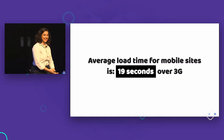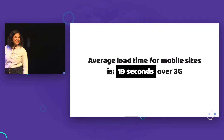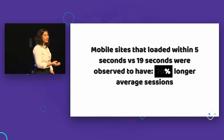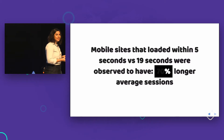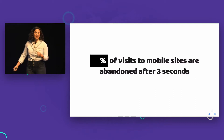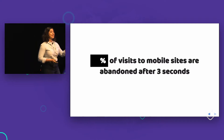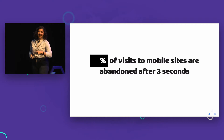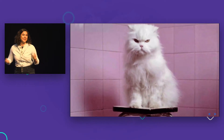It was 19 seconds. That's crazy. 19 seconds is the average load time of a mobile site over 3G. They also found that mobile sites that loaded within 5 seconds versus the average of 19 had 70% longer sessions. And what percent of visits to mobile sites were abandoned after just 3 seconds? 53%. Over half of those sessions — this is what we're doing to people on the web.